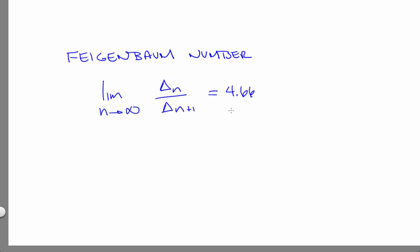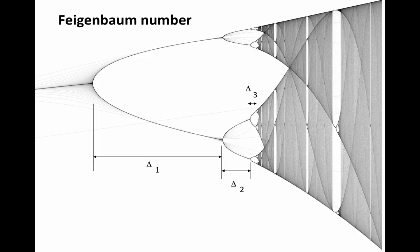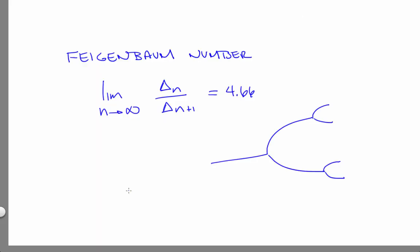Now you'll notice the limit in this equation. What that means is that delta 1 over delta 2 is close to 4.66. Delta 2 over delta 3 is closer to 4.66, and so on and so forth. And in the limit of very small bifurcations, the number actually limits to the Feigenbaum number. Note that the Feigenbaum number is about the widths of the pitchforks. There's a similar result, but with a different ratio for the heights.